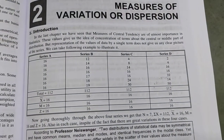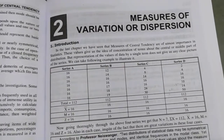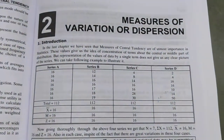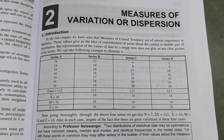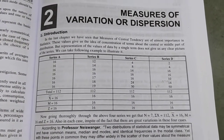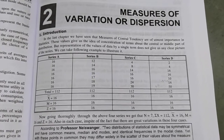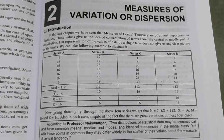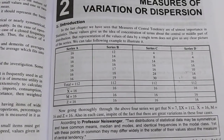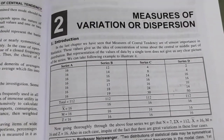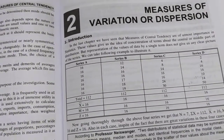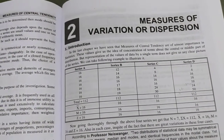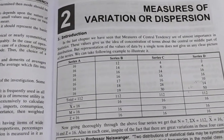Hi students, we have completed the measures of central tendency. The topics covered include mean, median, mode, weighted arithmetic mean, combined mean, corrected mean, and harmonic mean. In unit 2 there are four chapters: measures of central tendency, measures of dispersion, skewness, and kurtosis. We have completed one chapter so far.